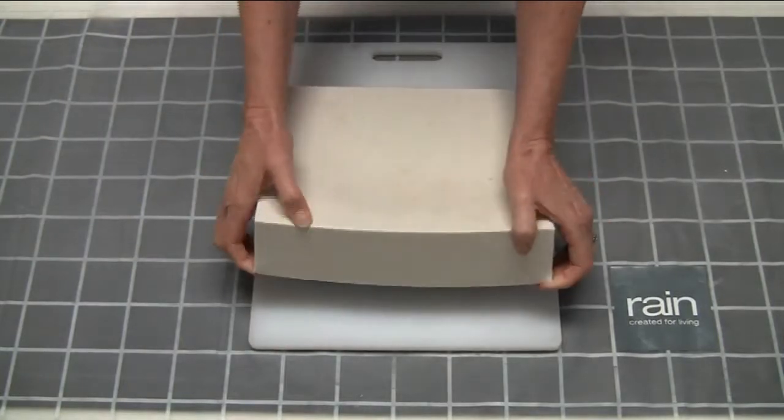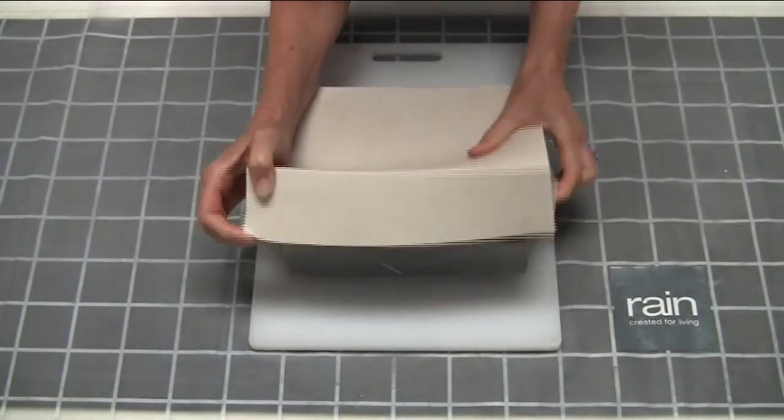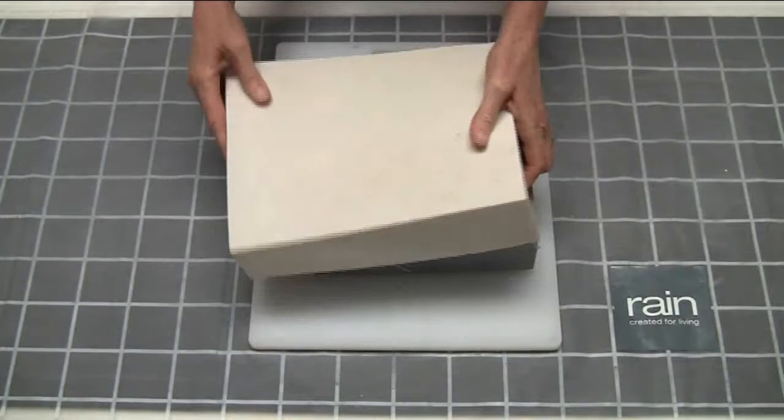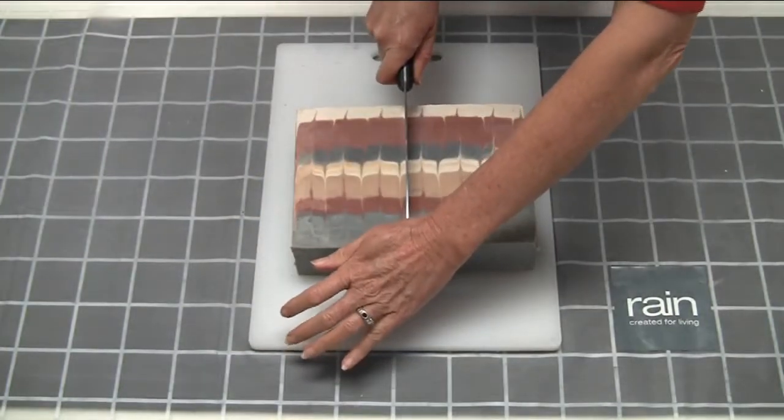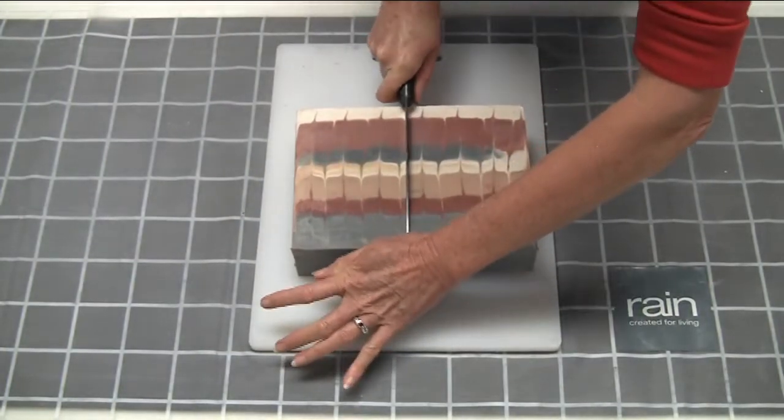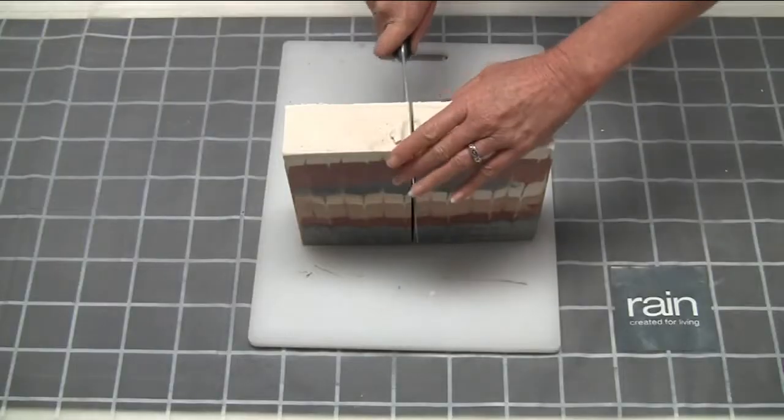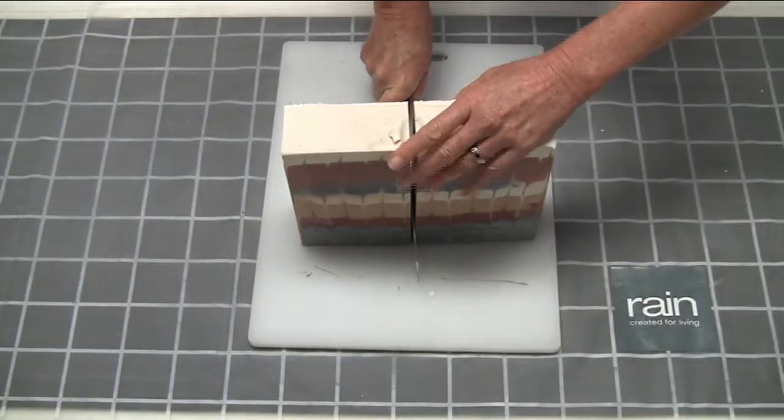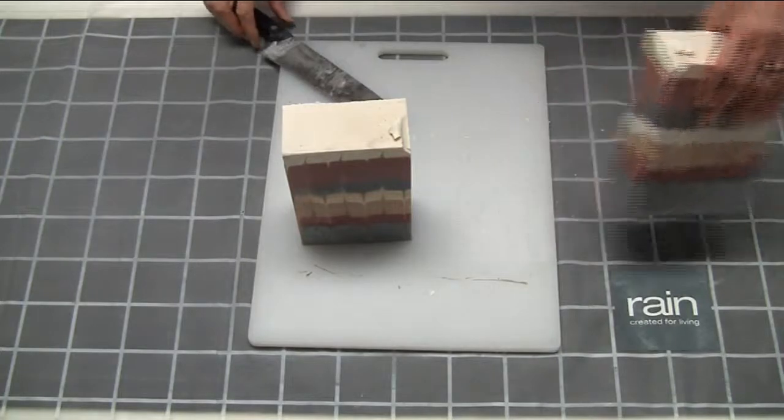24 hours later, we get to unmold our soap. This is really the best part of the whole process. Gently pull the sides away of the silicone mold and tease the soap from the mold.